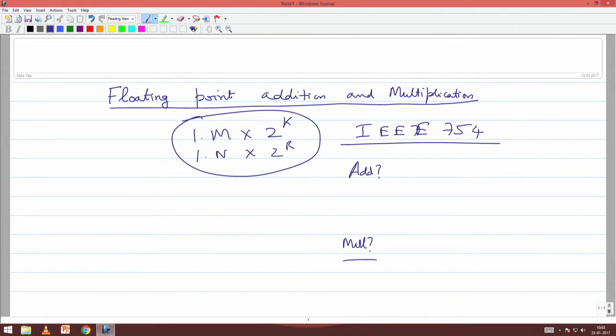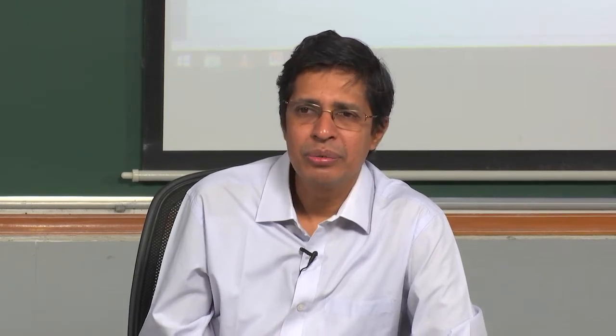If the exponents are k and r, we find the difference k minus r (or r minus k, whichever is larger). Whichever number has the smaller exponent, we shift it right; whichever has the larger, we can shift left. By doing this we can match the exponents.